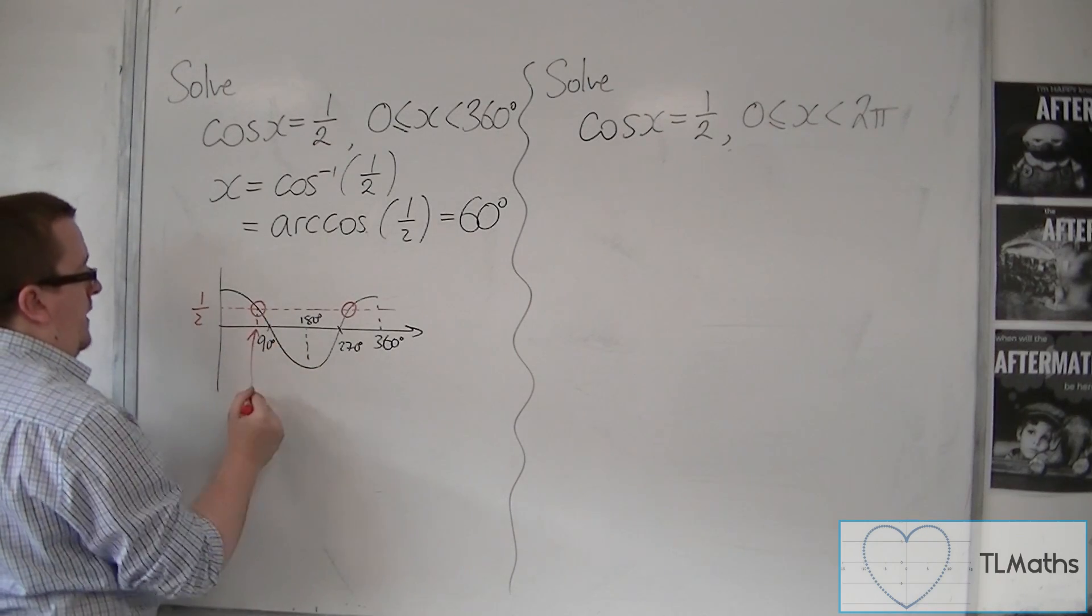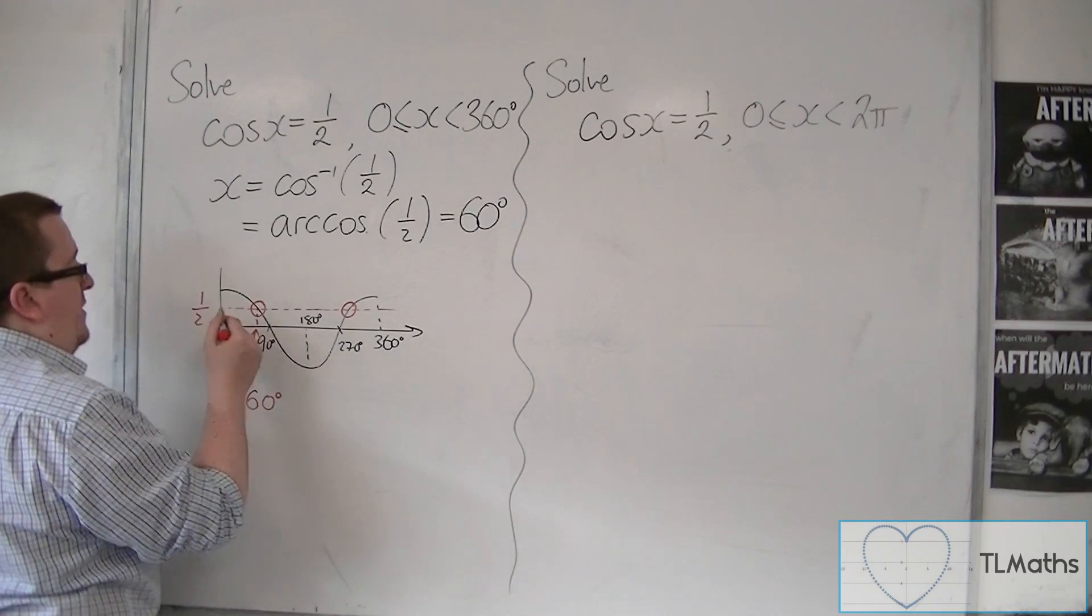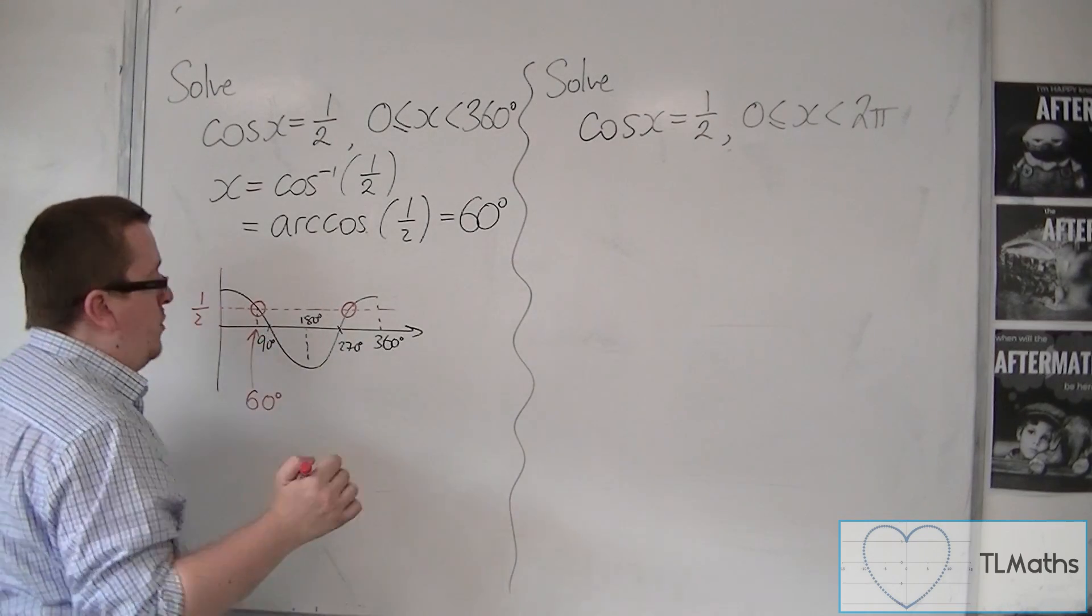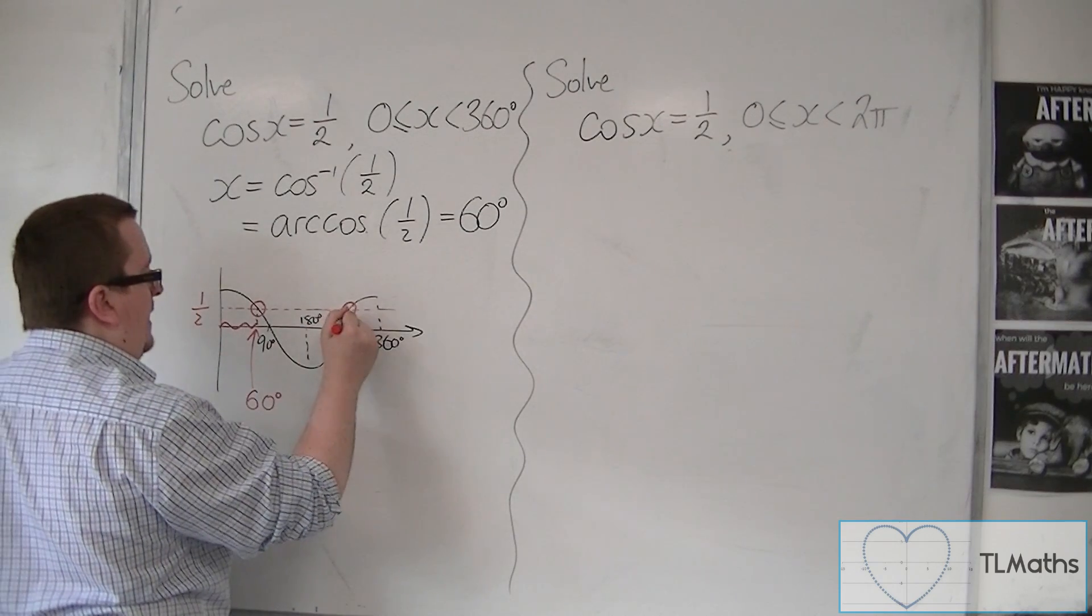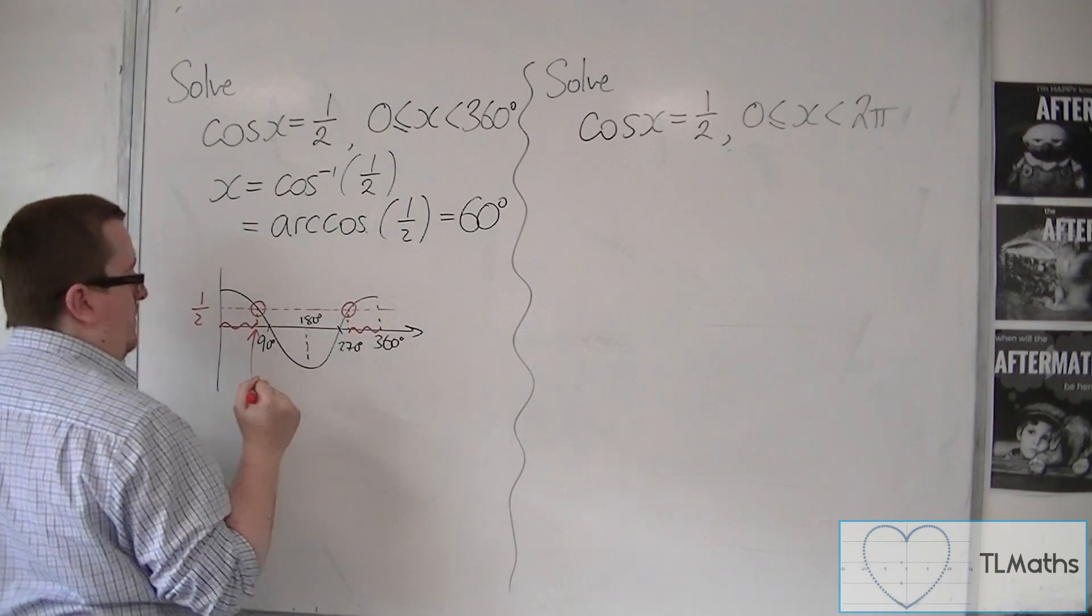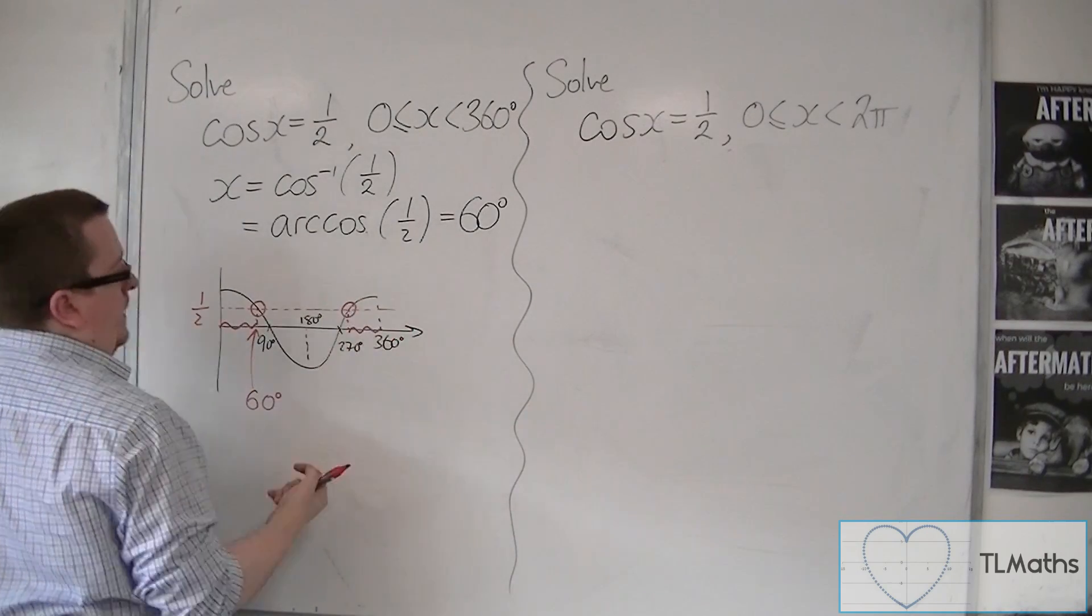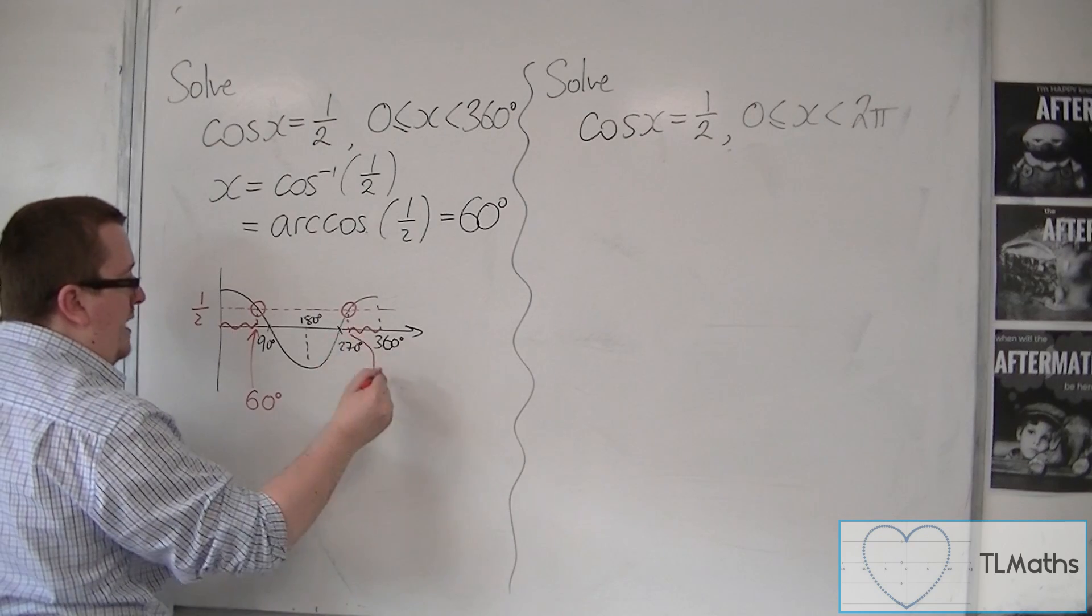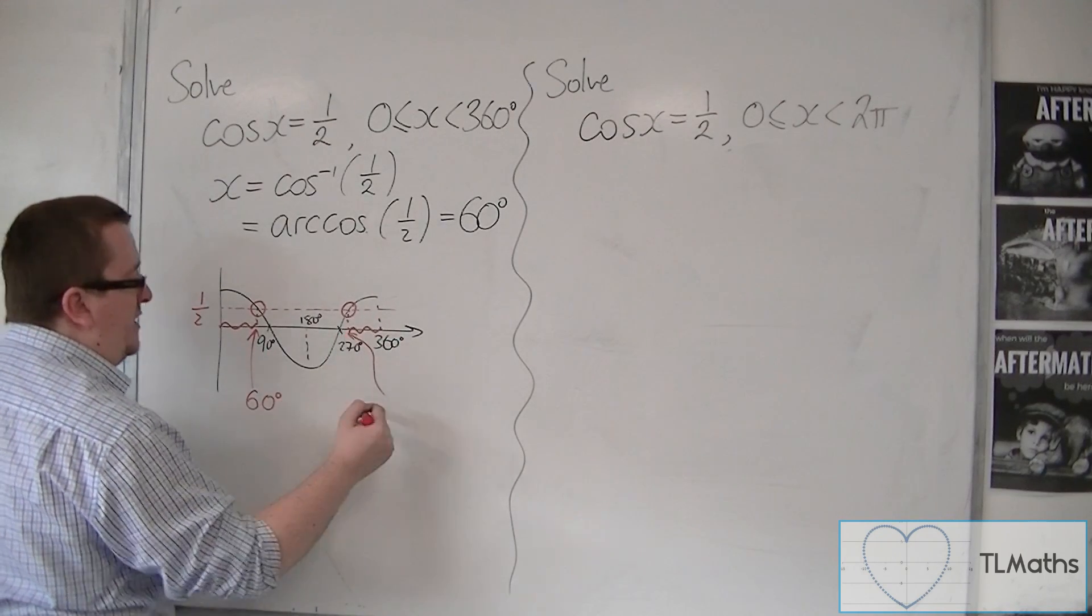This first one is the 60 degrees that my calculator has given me. And we're using the symmetry of the curve. This distance must be exactly the same as that one because this is a mirror image of that. So this value can be found by doing 360 take away the 60 degrees.